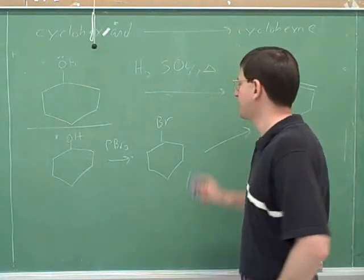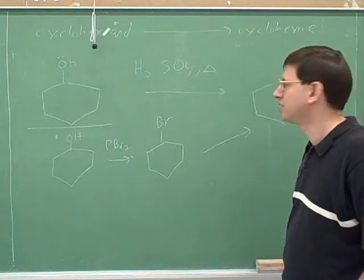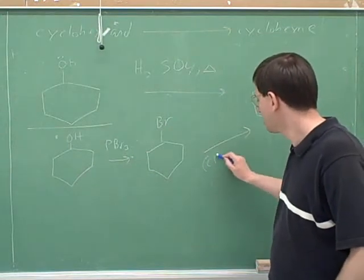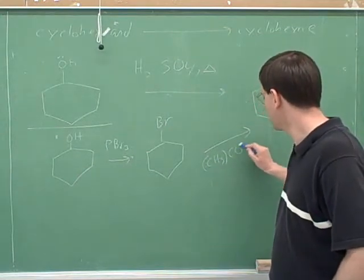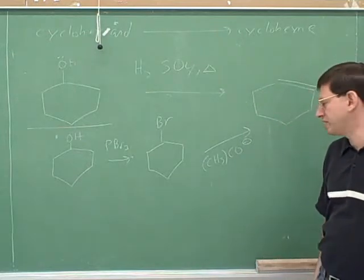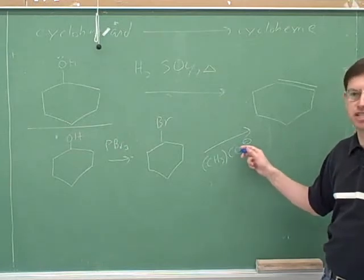And then what would be a good reagent to add to ensure that we just get E2? Like tert-butyl oxide. Yeah. Tert-butyl oxide or LDA. Okay. We know that if you go back to the table on page 3 of the SN2 handout, tert-butyl oxide pretty much always gives you just E2.